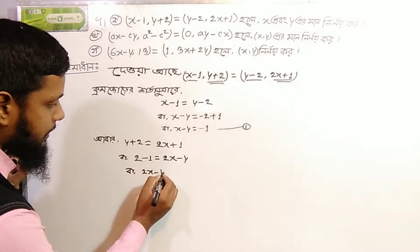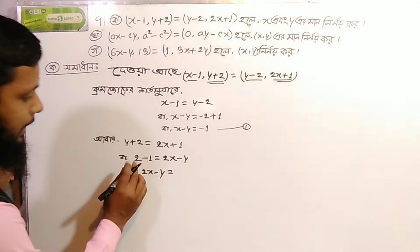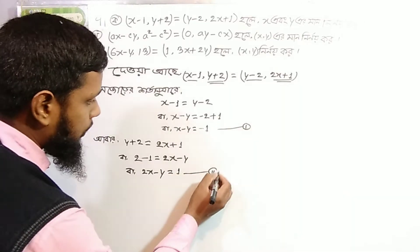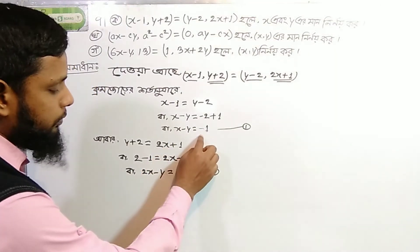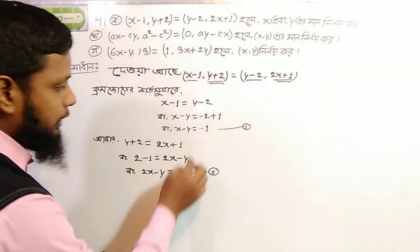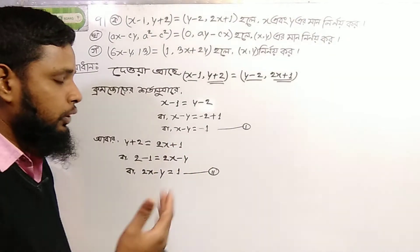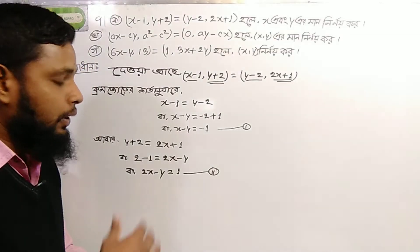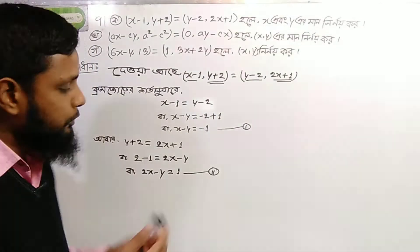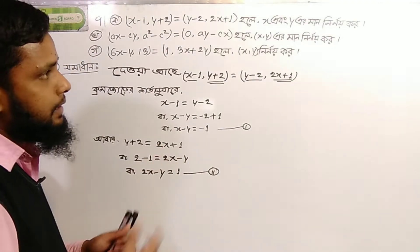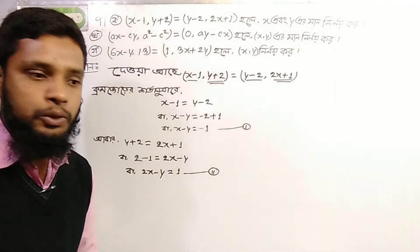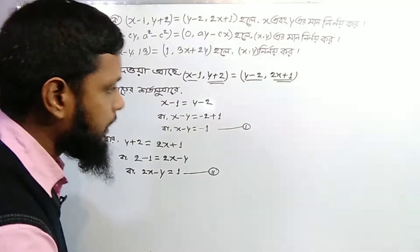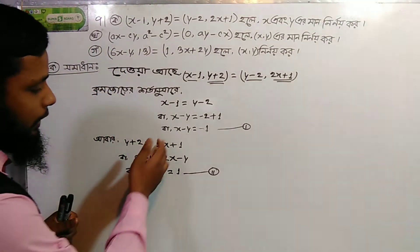2x minus y is equal to 1y. 2x minus y is equal to 2x minus y is equal to 1y.